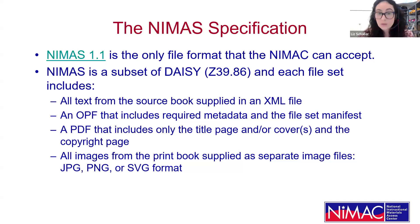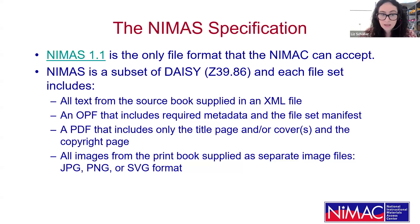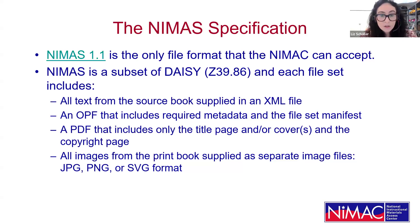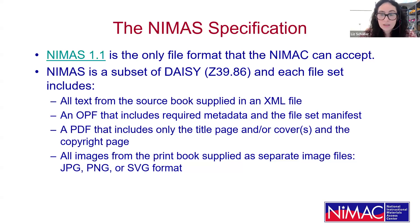The NIMAS 1.1 is the only file format that the NIMAC can accept. NIMAS is a subset of DAISY, and each NIMAS file set includes all of the text from the source book supplied in an XML file, an OPF that includes the required metadata and the file set manifest — the list of images in the file set — a PDF that includes only the title page and/or covers and the copyright page, as well as all of the images from the print book supplied as separate image files. These can be supplied as JPEG, PNG, or SVG format.